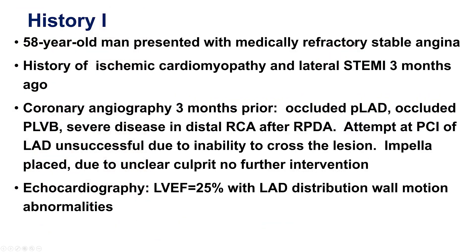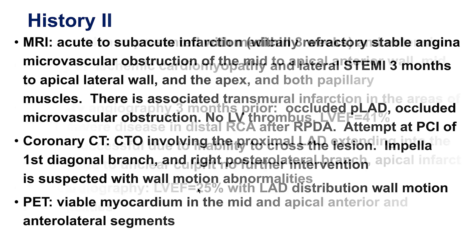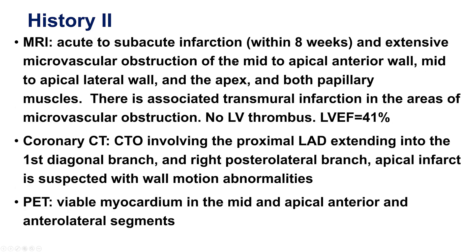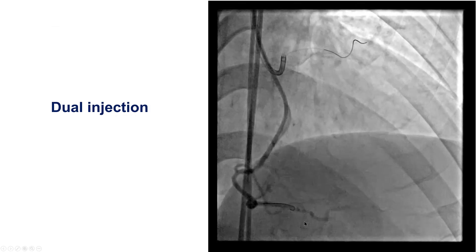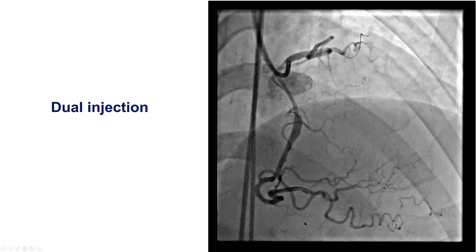The patient had presented with an anterior myocardial infarction three months prior. The LAD was occluded and he had severe disease in the right coronary artery that was successfully stented. He subsequently had an MRI that showed an improvement in ejection fraction to 41 percent, with some infarction in the anterior wall but viability in the majority of the anterior wall. As a result, the patient was referred for PCI of the LAD CTO.